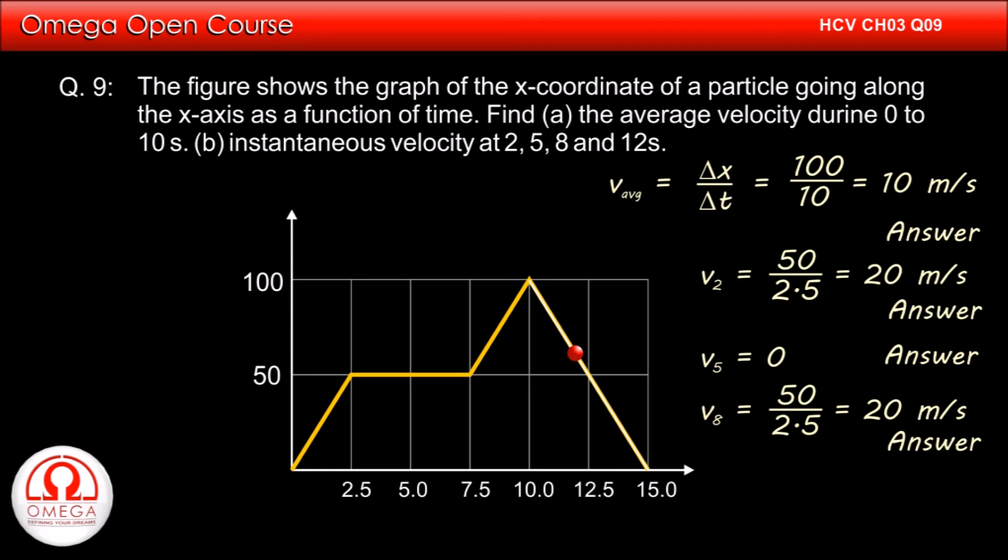Slope at t equals 12 seconds is minus 100 divided by 5, or minus 20. Thus, velocity at t equals 12 seconds is equal to minus 20 meters per second. This is our answer.